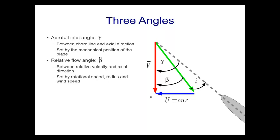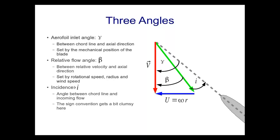Beta is controlled by several factors. It is set by the wind speed — if wind speed changes and everything else stays constant, beta changes. It's also set by the radius: even at fixed rotational speed omega, as the radius varies, the frame velocity u varies, so beta varies up and down the blade — which explains why wind turbine blades tend to be twisted. Beta is also set by the rotational speed omega: varying omega varies the inlet angle beta. Finally, the incidence angle i is the angle between the chord line and the incoming flow, and its sign convention runs in the opposite direction to gamma and beta, which causes some confusion.